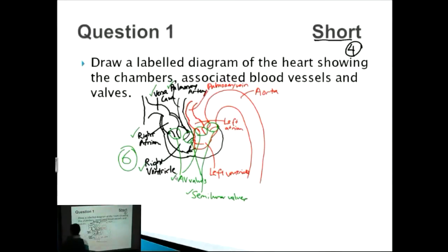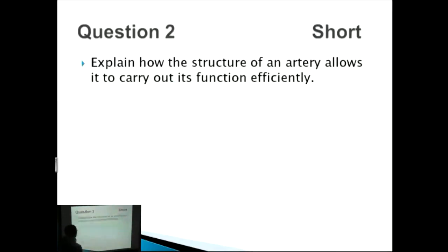The next question is about the structure of an artery that allows it to carry out its function efficiently. Best way to do this one, again, just draw a diagram. You've got an artery which looks something like this, and you're going to work from inside the lumen outside. The very first thing is it's got a narrow lumen to maintain high pressures. You're looking for about four to five points. Another thing is that on the inside of the lumen you've got a layer of endothelium, it's like slippery wax so that you reduce the friction.